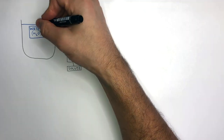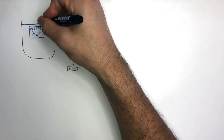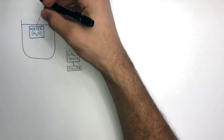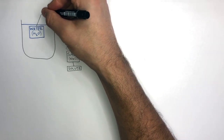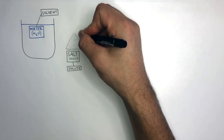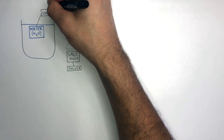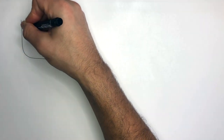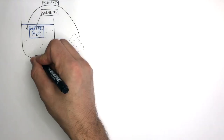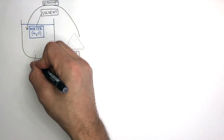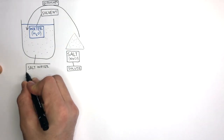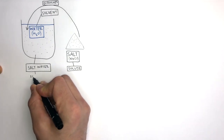Because the water is the substance in which the salt dissolves in, the water is known as the solvent. When the salt is added to the water, the salt dissolves in the water. This forms a mixture known as salt water, and this salt water is known as a solution.